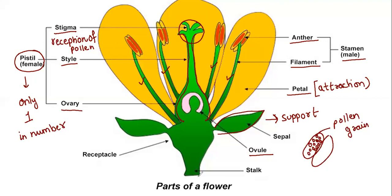The stalk and receptacle part also provide support to the developing flower. That's how a plant flower looks like.